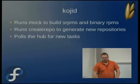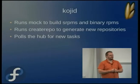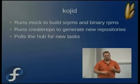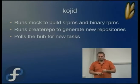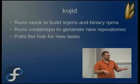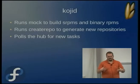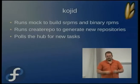Koji D is generally the most active component. It runs mock, creates source RPMs, creates binary RPMs, runs create repo to generate repositories, and polls Koji Hub for new tasks to keep things moving along.